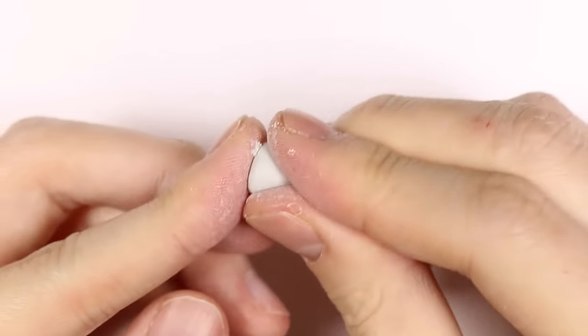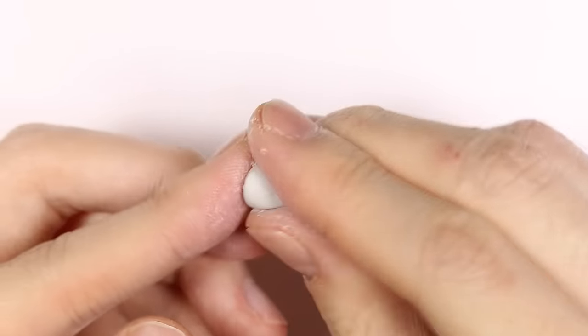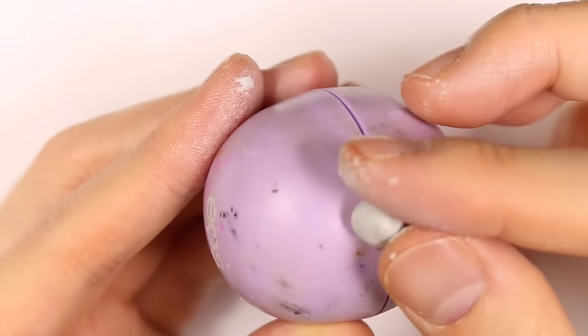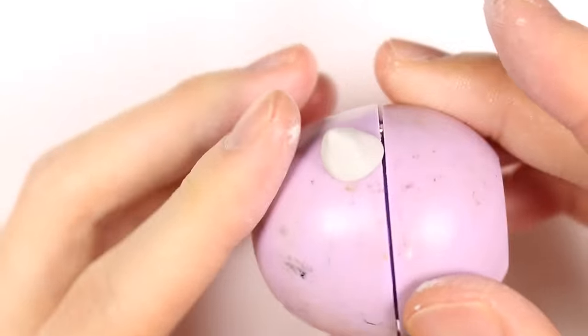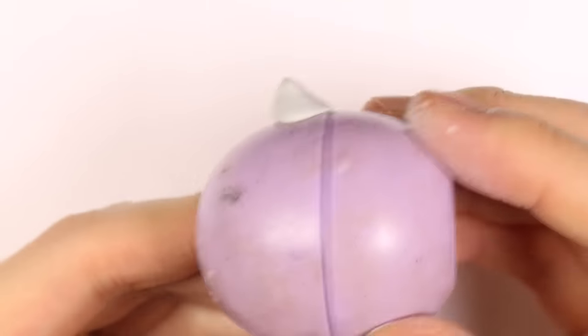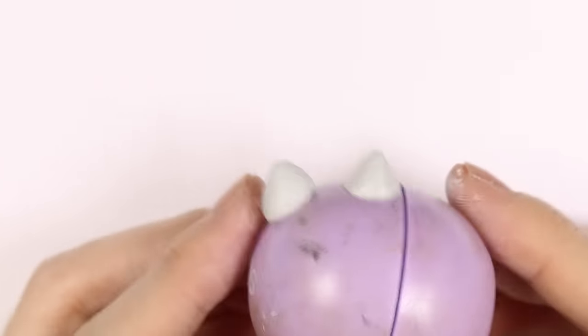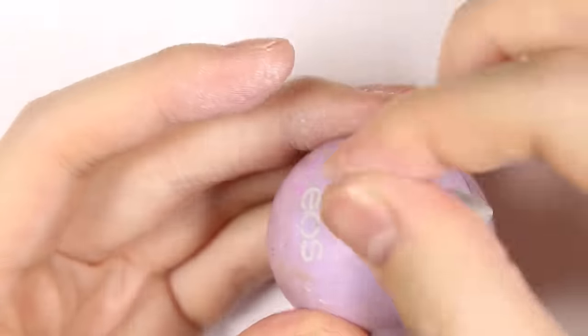Next I'm rolling some clay into a cone shape and I'm going to add that as my ear to my Pusheen. I'm going to put that at the corner near the division line, and I'm adding a second ear towards the front of the head.